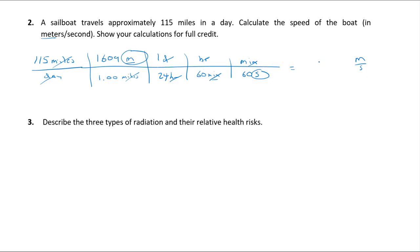Crunching the numbers gives 2.14 meters per second — three sig figs matching the given value of 115. The conversion factors like 24 hours per day are formal definitions, so they don't restrict significant figures. There we go.